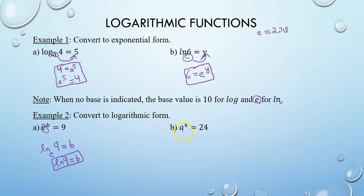Next, in part b, you have the variable a — base is a — a to the 4th equals 24. This means log base a of 24 equals 4. That is converting from exponential to log form.